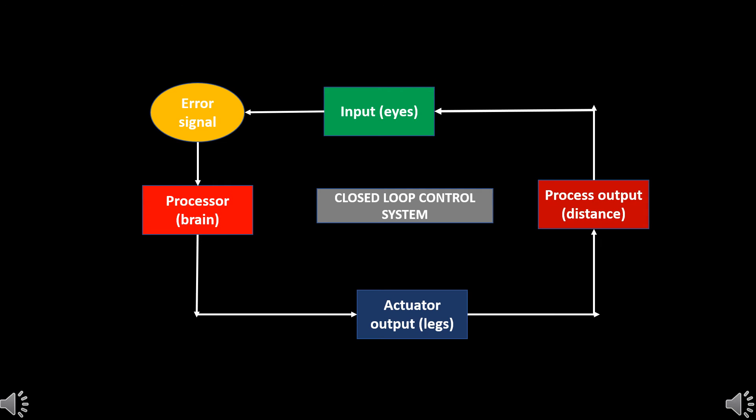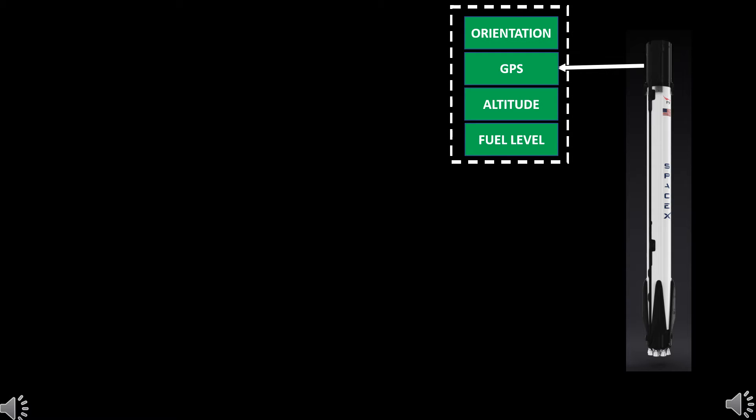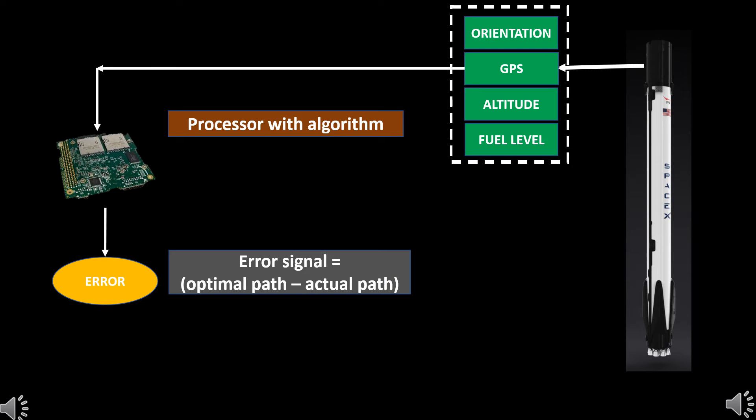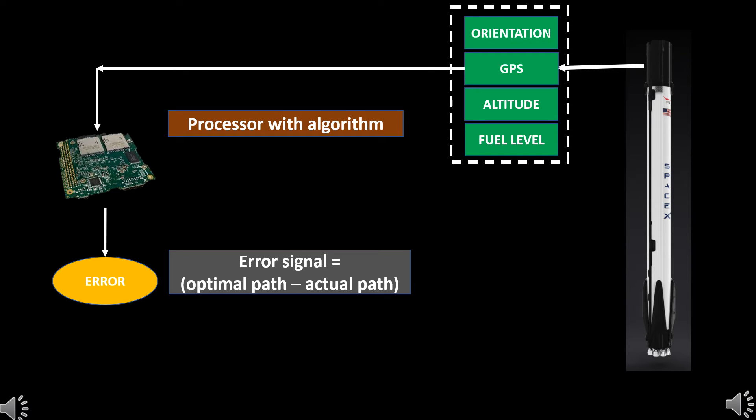In the Falcon, the position, orientation and the altitude of the body is continuously measured by the input sensors like the GPS. This input is given to the on-board computer. The computer compares the optimal path calculated by the algorithm and the actual position of the Falcon. This difference provides the error signal. Based on this error signal, the computer sends the output signal to the actuator drive controllers which then drives the various output actuators.